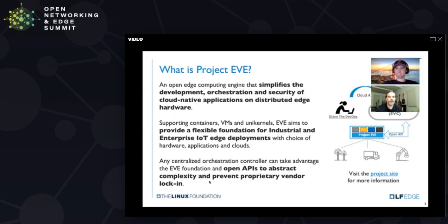It could be a gateway, it could be a server on a factory floor — anything out in the wild that you need to make sure is very secure. You want to abstract all that complexity from the hardware and make it much easier for developers to deploy applications and orchestrate those applications remotely, completely open.